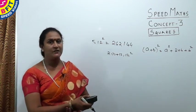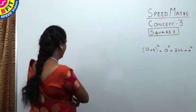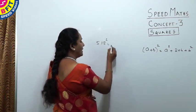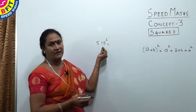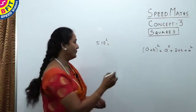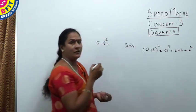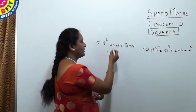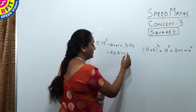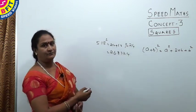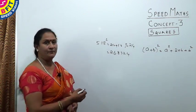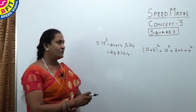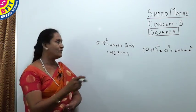For 518: square 18 — 18² = 324. Add 18 to 250: 250 + 18 = 268. So 518² = 268324. We have now seen how to find squares of numbers starting with 5, both two-digit and three-digit, and this concept is also used in other chapters.